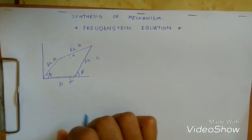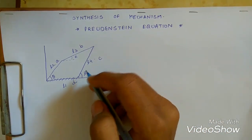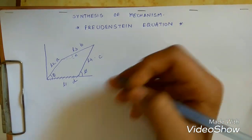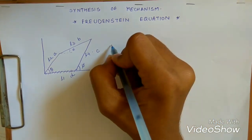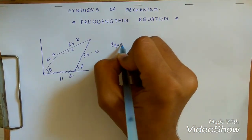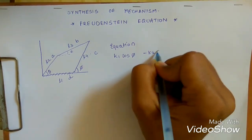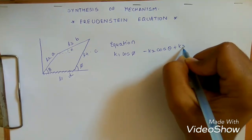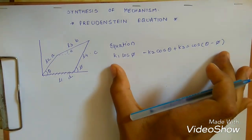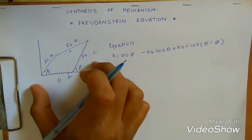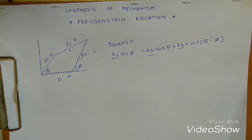Freudenstein's equation is useful in calculating the dimension of the links used in the mechanism. We will not go into the depth of derivation — it will be covered in another video. If you want, you can comment in the section below and ask queries. The equation goes as follows: k1·cos(phi) − k2·cos(theta) + k3 = cos(theta − phi). This equation has three terms: k1, k2, and k3.